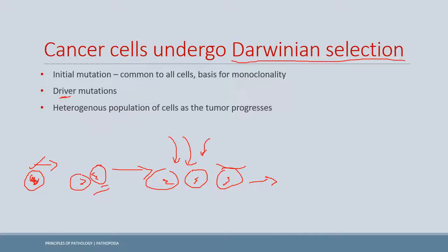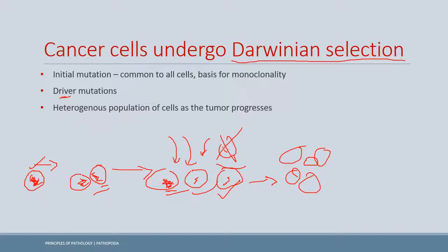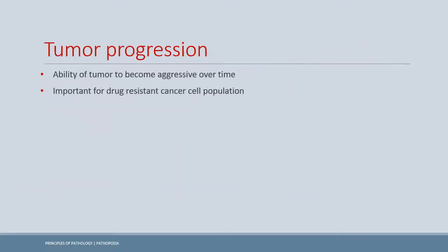The original initial mutation is generally seen in a subset of the cell population — one cell may carry it while others die due to tumor suppression activity. Cells without new driver mutations are not selected preferably, as the initial mutation alone is not enough to maintain proliferative capacity under tumor suppression. This ultimately leads to formation of a heterogeneous population of neoplastic cells with different mutations that survived in different environments.